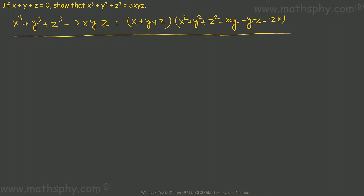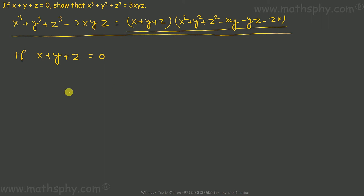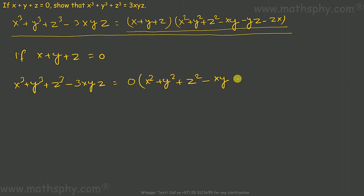Now, it says if x plus y plus z is 0, it means in this equation here I can replace x plus y plus z with 0 — so it becomes 0 into x. And 0 into anything will give you 0.